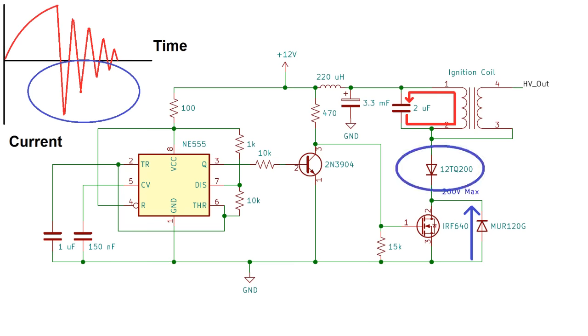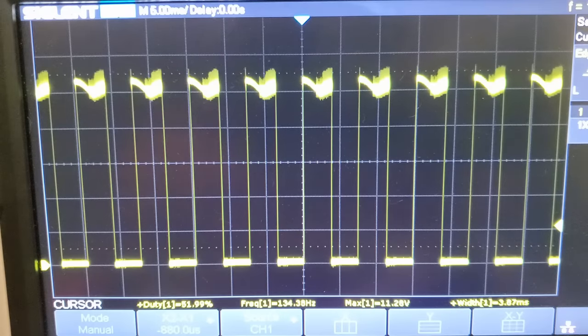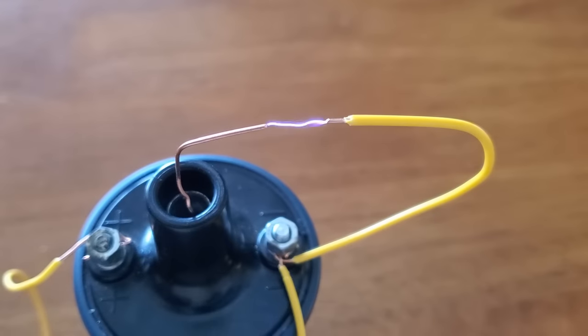Okay, let's see the circuit in action. Here's the gate voltage of the MOSFET, and here's the high voltage arcs.